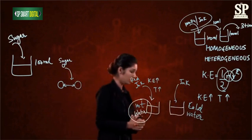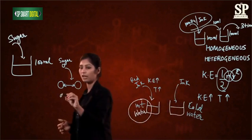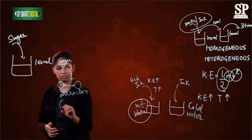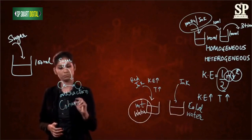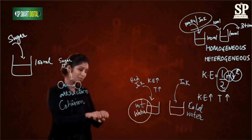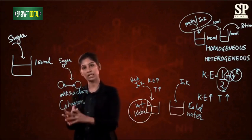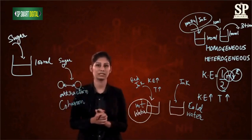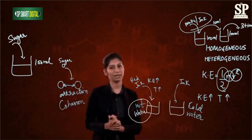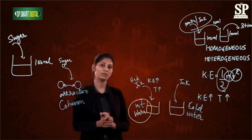The third property of particles is that they attract each other. They have some force of attraction between them, which is called cohesion. For example, if I try to break a pen, I am applying energy to break its crystals into particles. This proves that these particles have some force of attraction between them.